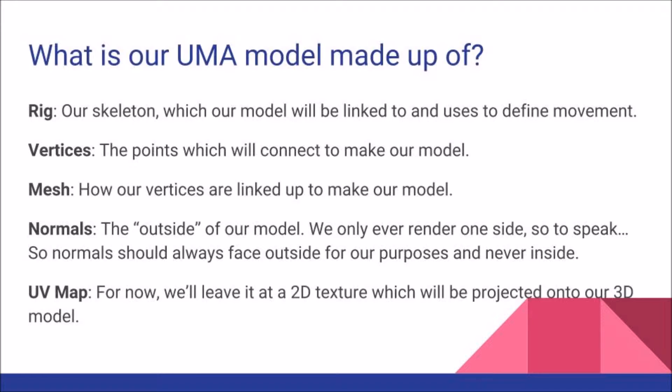There's something called weighting, so different parts of the rig are attached to different vertices. Vertices are like the dots in a dot-to-dot — they're the points we connect to make our model. From those points, like with a dot-to-dot, it all comes together to make what's called a mesh — that's how our vertices are linked up to form our model.